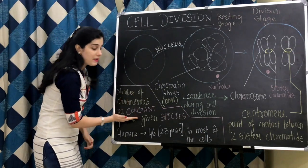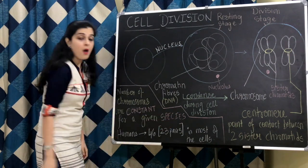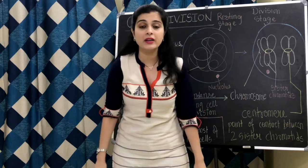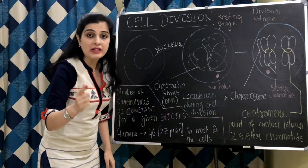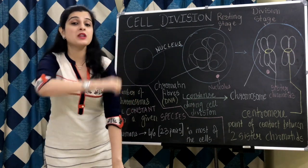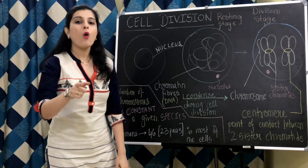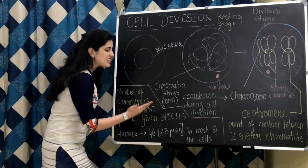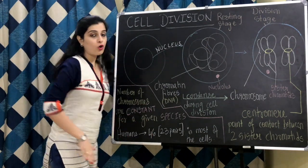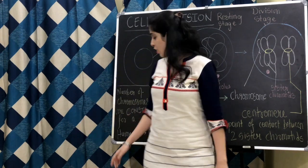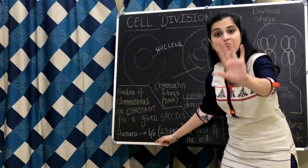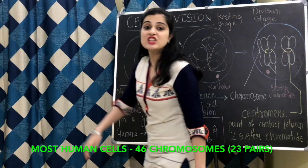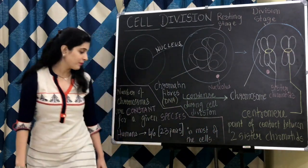The number of chromosomes remains constant for a given species. What makes us all human? There has to be something similar between us. The similar thing is the number of chromosomes in most of our cells. What makes you human is that most of your cells have 46 chromosomes in them. Chromosomes are always present in pairs, which makes it 23 pairs of chromosomes in each and every cell of your body.